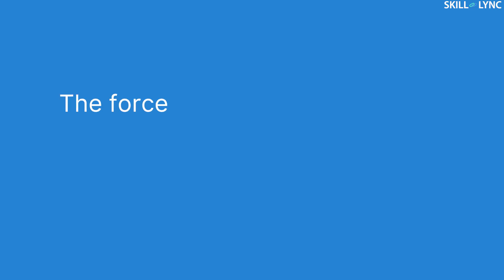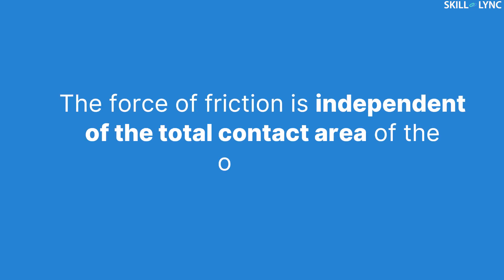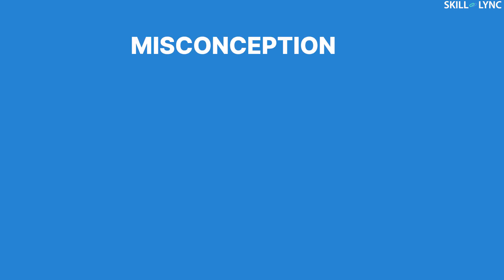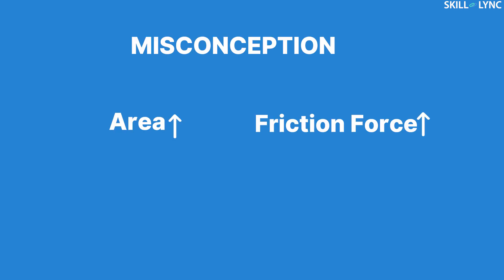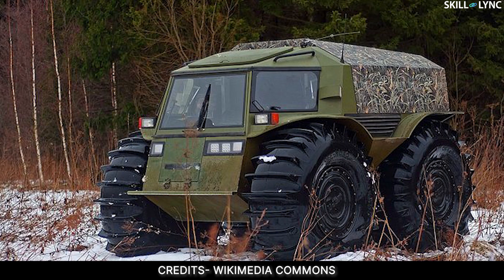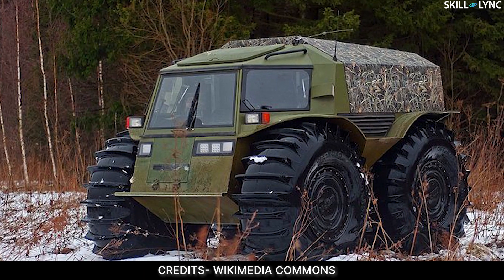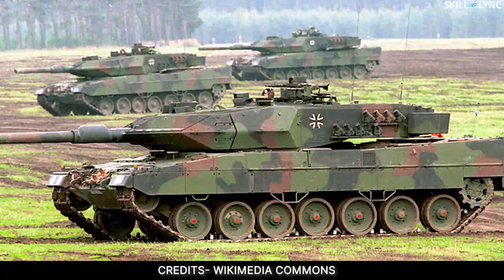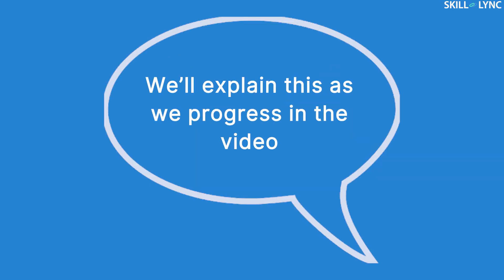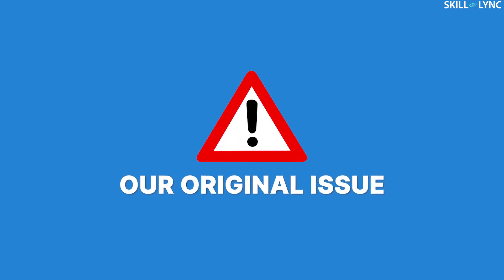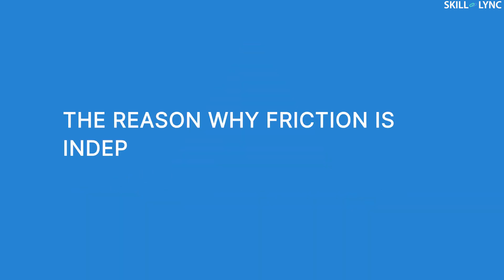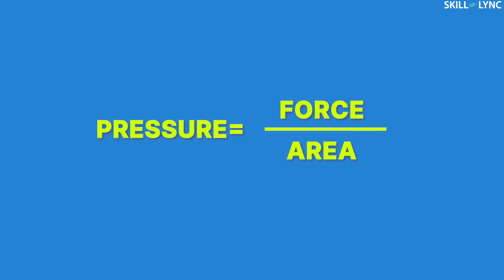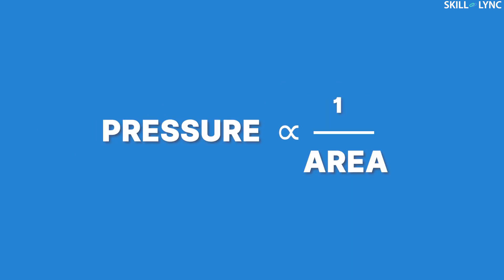The second law of friction states that the force of friction is independent of the total contact area of the objects. It's a common misconception that objects which have a huge area of cross section tend to experience greater friction during movement — this is a totally wrong assumption. The reason why friction is independent of area is because of pressure. The formula for pressure is force divided by area, and pressure is inversely proportional to area.